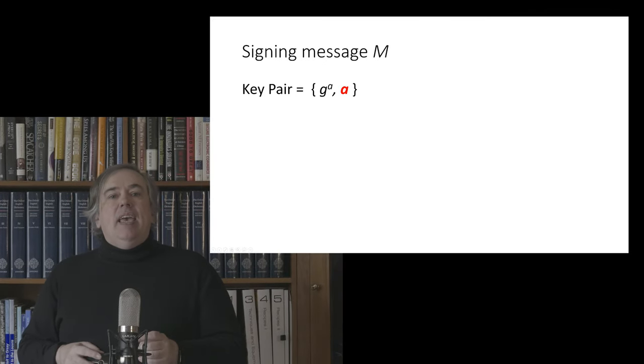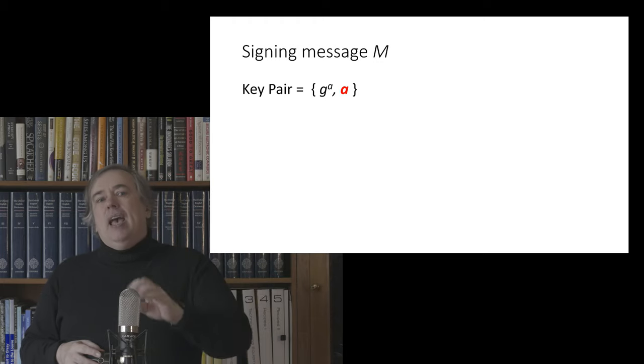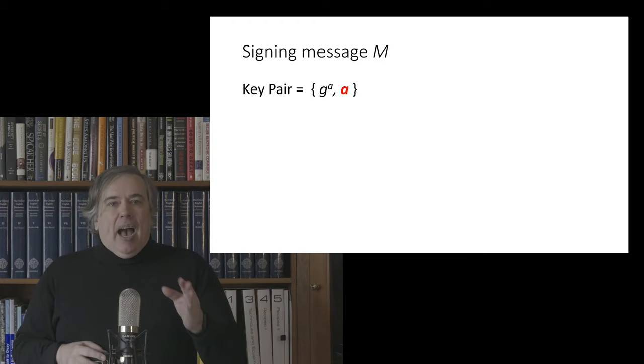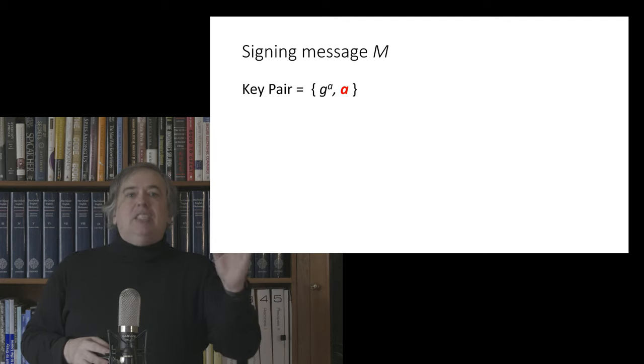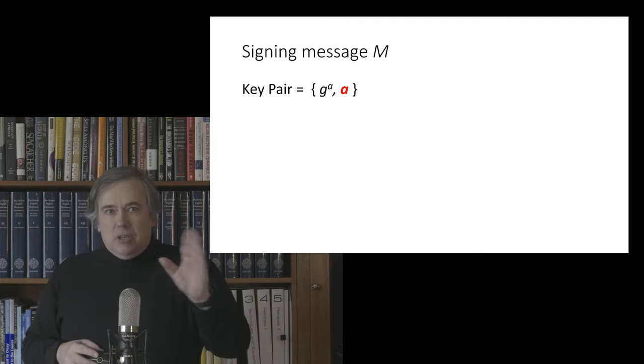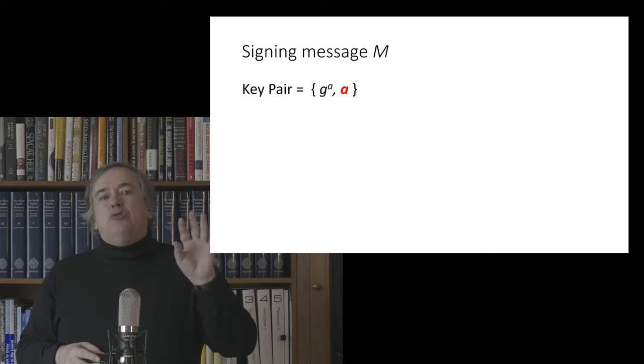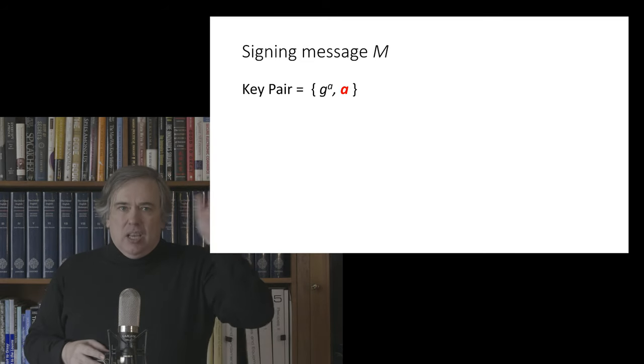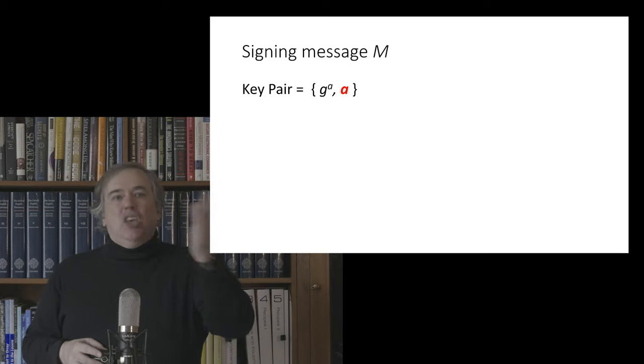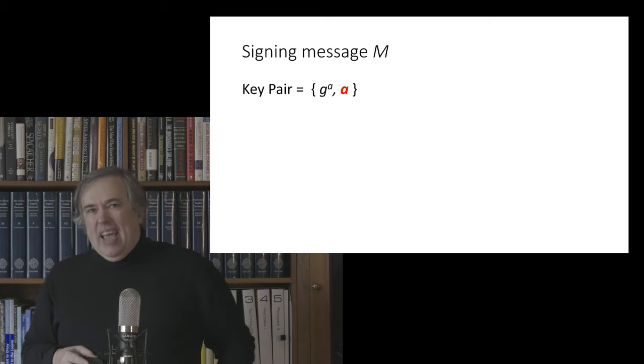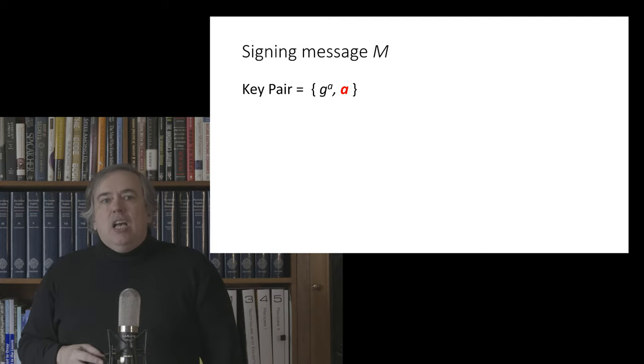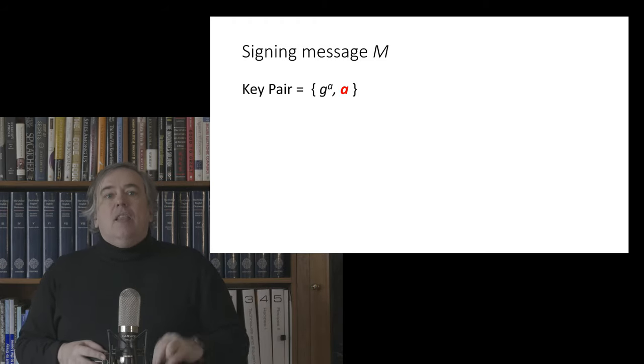So what does an El-Gamal Schnorr DSA signature look like? To create a signature, Alice is going to start off with a public-private key pair. Her public key is going to be g to the a mod p and her private key is going to be a. To simplify the diagrams for the rest of this module, I'm going to be dropping out the mod p piece because I'm just going to take that as implicit in the operators. She has this public-private key pair and the public key is published in a telephone directory somewhere.